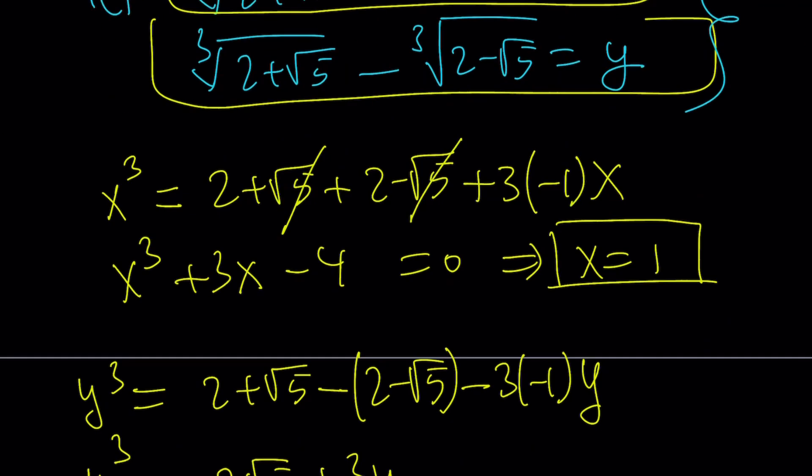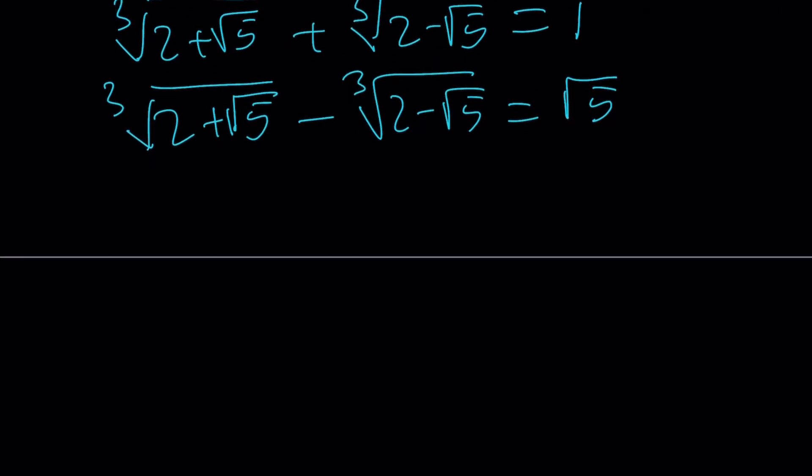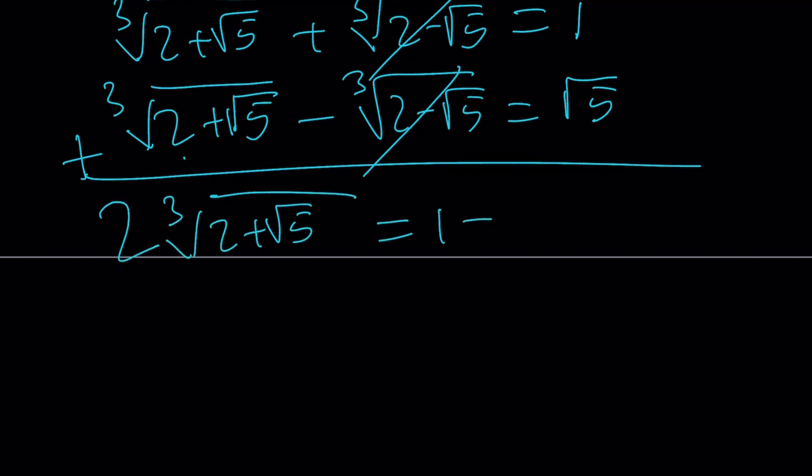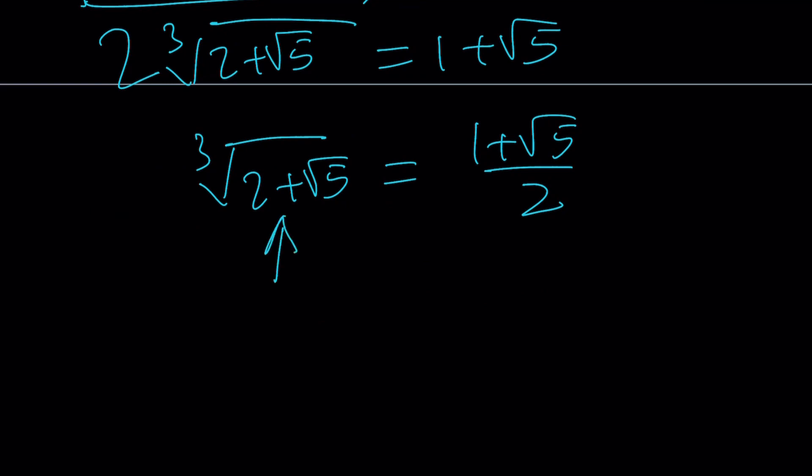So, let's go ahead and add these up. They cancel out. We get the cube root of 2 plus root 5 two times, and that's equal to 1 plus root 5. If I divide both sides by 2, then I get cube root of 2 plus root 5 is equal to 1 plus root 5 over 2. And let's just remember that this was the sixth root of 9 plus 4 root 5.